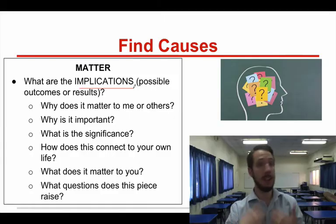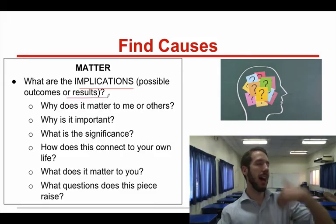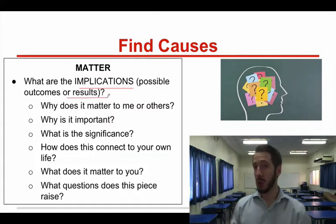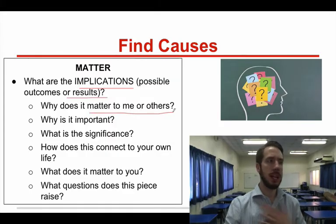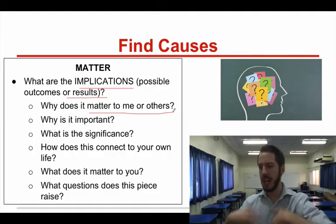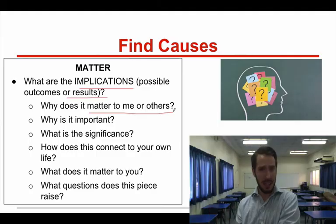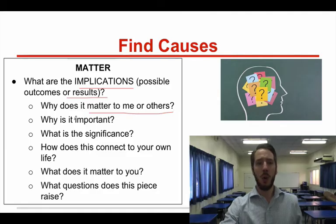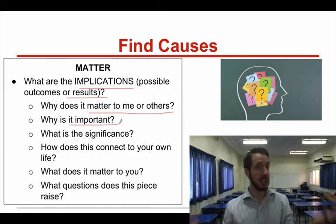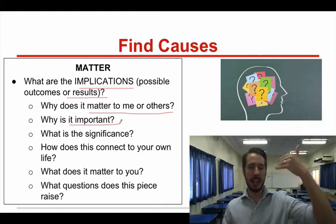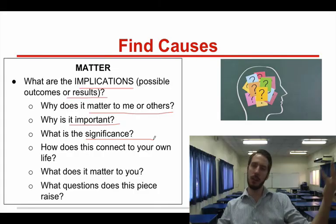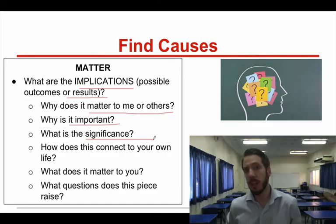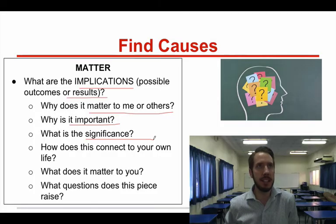The Matter section is about the implications of that text. What are the outcomes of this study or research? What were the results? How would that change our society, the world, or your particular academic field? Here are some questions to think about: What does it matter to me, and what does it matter to other people? How are the implications going to influence either me or the people around me? Why is it important in your academic field or just in general? Why is this text important, and what's the significance of it?